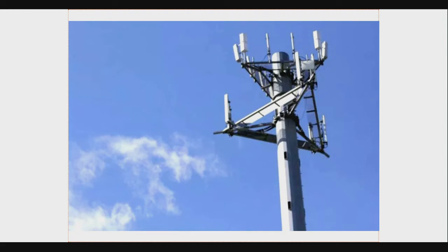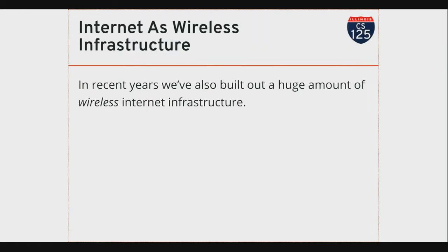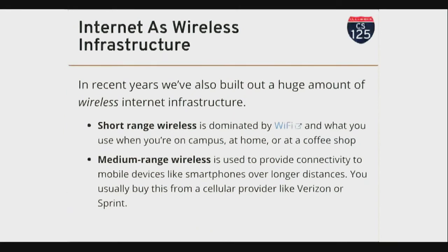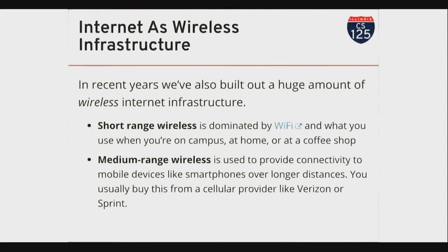These two companies sharing the tower haven't agreed on the best way to divide up the coverage area - you can see the two triangles are aligned differently, meaning they probably agreed on this tower location as a compromise but divided space differently. And that was the second big evolution the internet went through - all this wireless connectivity we've built out. This has required an enormous amount of infrastructure, both short-range Wi-Fi and medium-range connections operated by cellular providers.